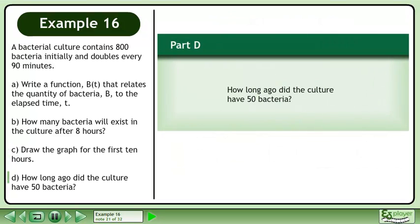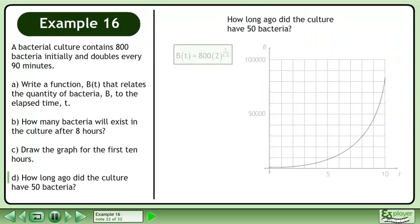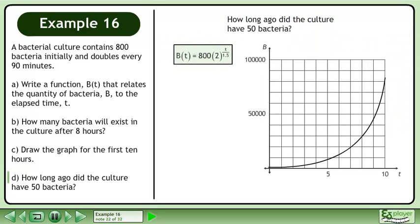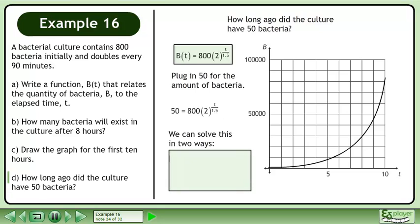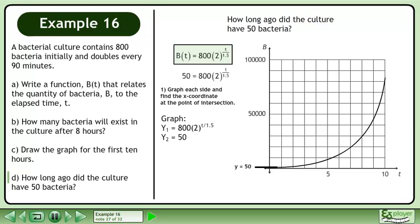Now we'll move on to Part D: how long ago did the culture have 50 bacteria? Bring up the function and the graph, and plug in 50 for the amount of bacteria. We can solve this in two ways. One way is to graph each side and find the x-coordinate at the point of intersection. Another way is to use logarithms to solve for t. Graph Y equals 50.